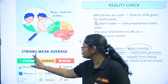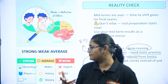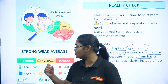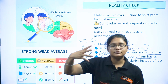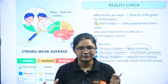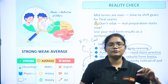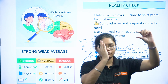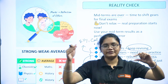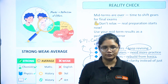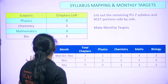For example, you might be average in chemistry, weak in physics, and strong in maths. Even within maths, there will be certain chapters where you are weak — mention those too. Make a subject-wise list for maths, chemistry, physics, and biology, noting which chapters are strong, average, and weak. Do this for all subjects before moving forward.